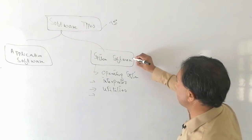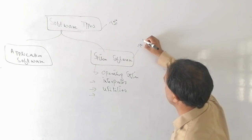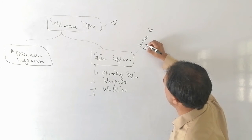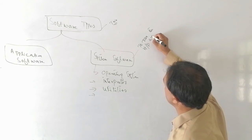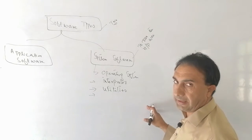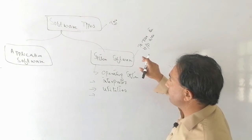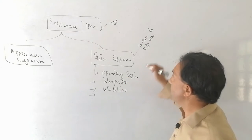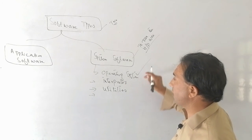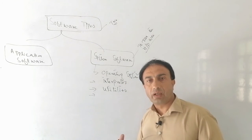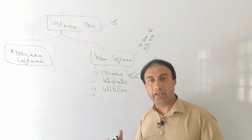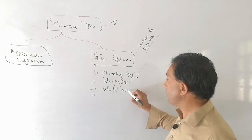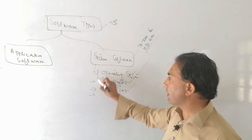System software is used to run the hardware. It allows hardware to perform its functions. The operating system acts as an interface between the user and the computer. Utilities are also a type of system software.